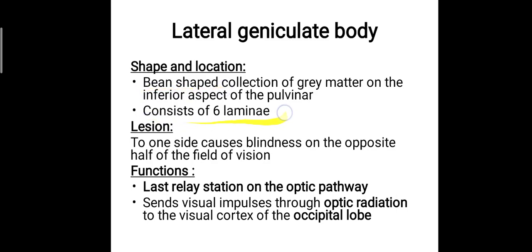The lateral geniculate body is beam-shaped and consists of six laminae — that is, six layers. If a lesion happens to one side, it causes blindness in the opposite half of the field of vision; that is the peculiarity of the lateral geniculate body. It is the last relay station on the optic pathway and sends impulses through the optic radiation to the visual cortex of the occipital lobe.